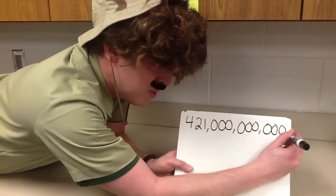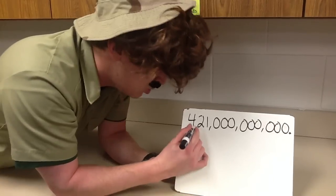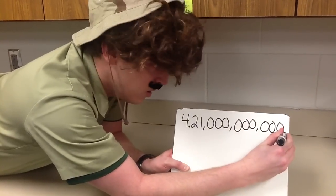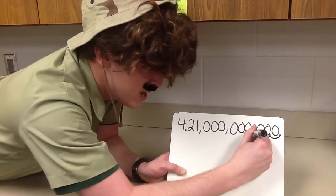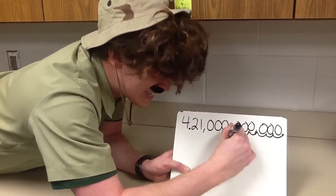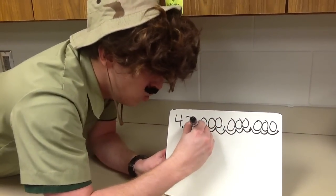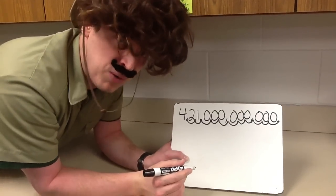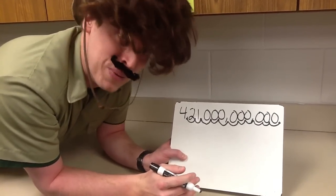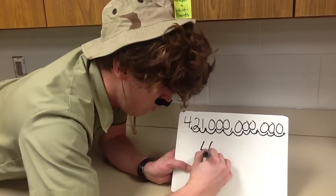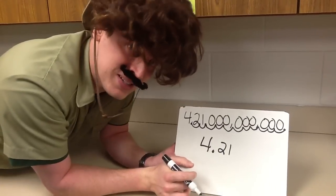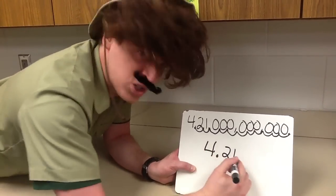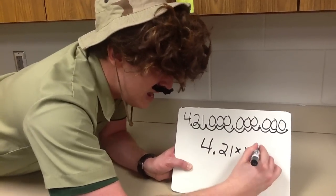Now watch what I do. We'll start at the end of the number. We're going to count how many places it takes to get right about here. Together now: one, two, three, four, five, six, seven, eight, nine, ten, eleven places. Wow, that's a crazy amount of places — that's a pretty big number. 421 billion. So we're going to write it down: 4.21. How many places did I move it? Good job — eleven places. So we have 4.21 times 10 to the 11th power.